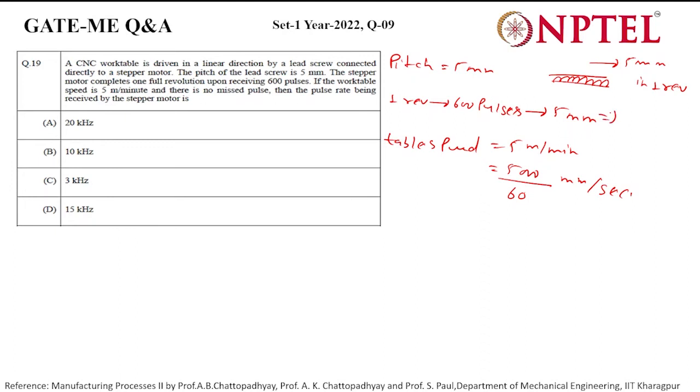From here we can get, in 5 mm we require 600 pulses. So 1 mm would be 120 pulses. 1 mm in 120 pulses.